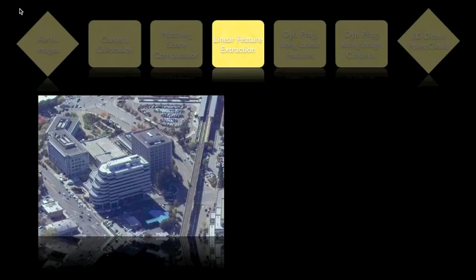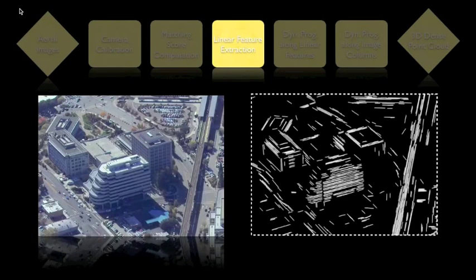Then, from the reference image, salient linear features are extracted. The algorithm favors longer-running lines because they constrain the reconstruction across more image columns, therefore providing a more powerful structural constraint.